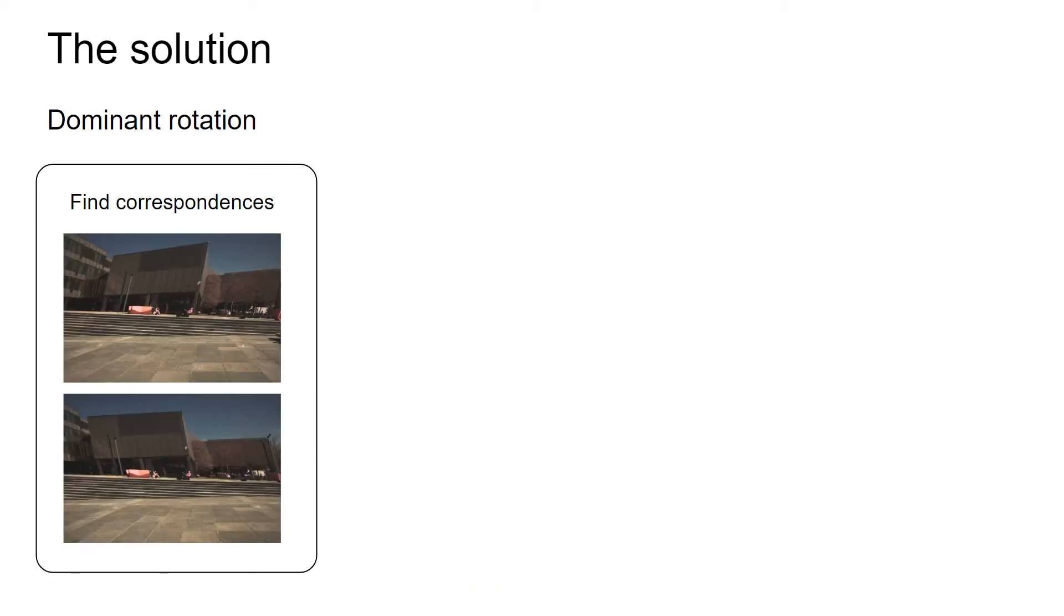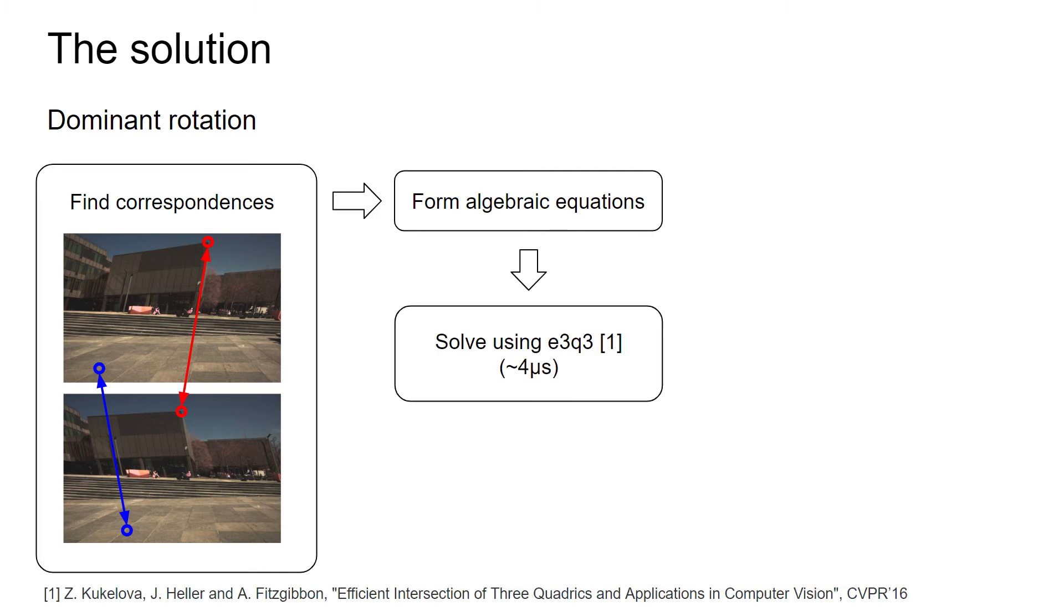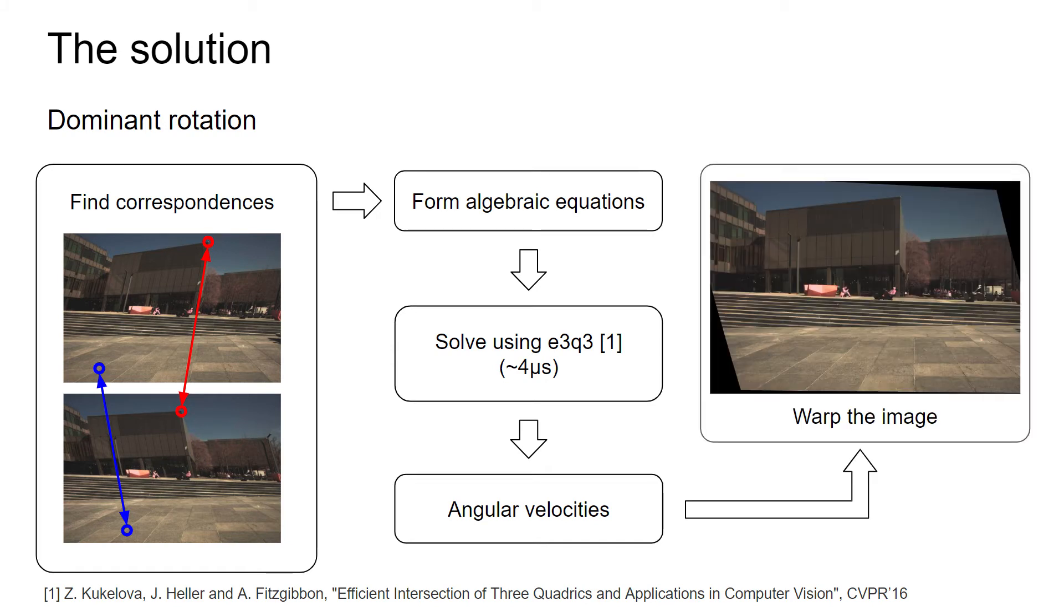Now we take a look at the case where rotation motion is dominant, which is common in handheld photo or video. This time, things get much easier, as we only need two correspondences. The system of equations becomes much simpler, and we show how to solve it using a recently published solver that only takes around 4 microseconds. Once we obtain the angular velocities, we do not need to establish the dense correspondences, but instead we have a mapping to warp the entire image to an undistorted image.